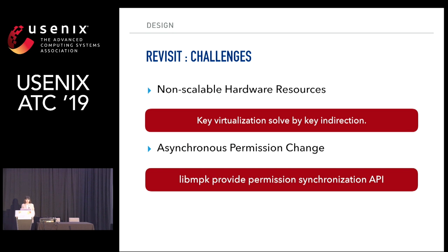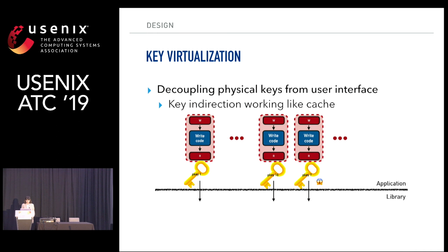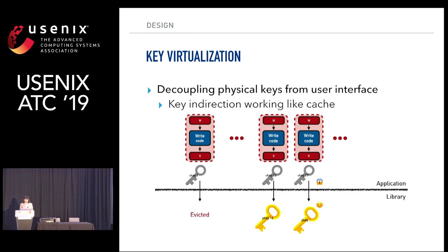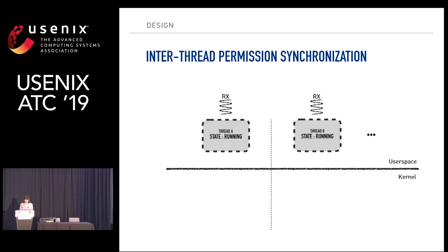To address these two challenges — non-scalable hardware resources and asynchronous permission change — we designed key virtualization and a permission synchronization API. Key virtualization decouples physical keys from the user interface, working like a cache. If more than 16 protection keys are needed, one physical key will be evicted and reassigned to a new virtual key in the library.